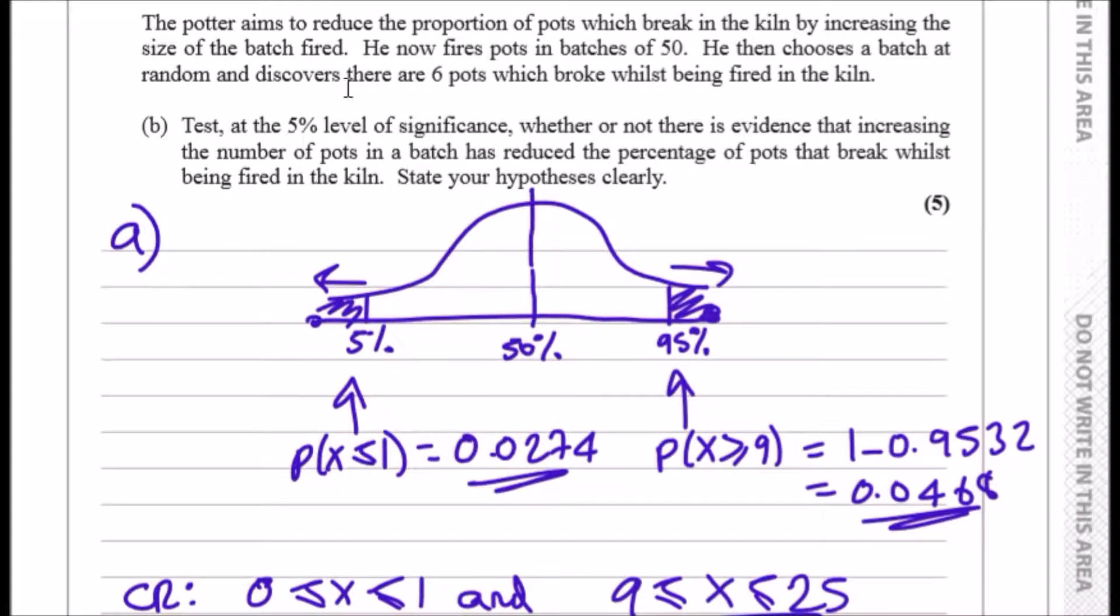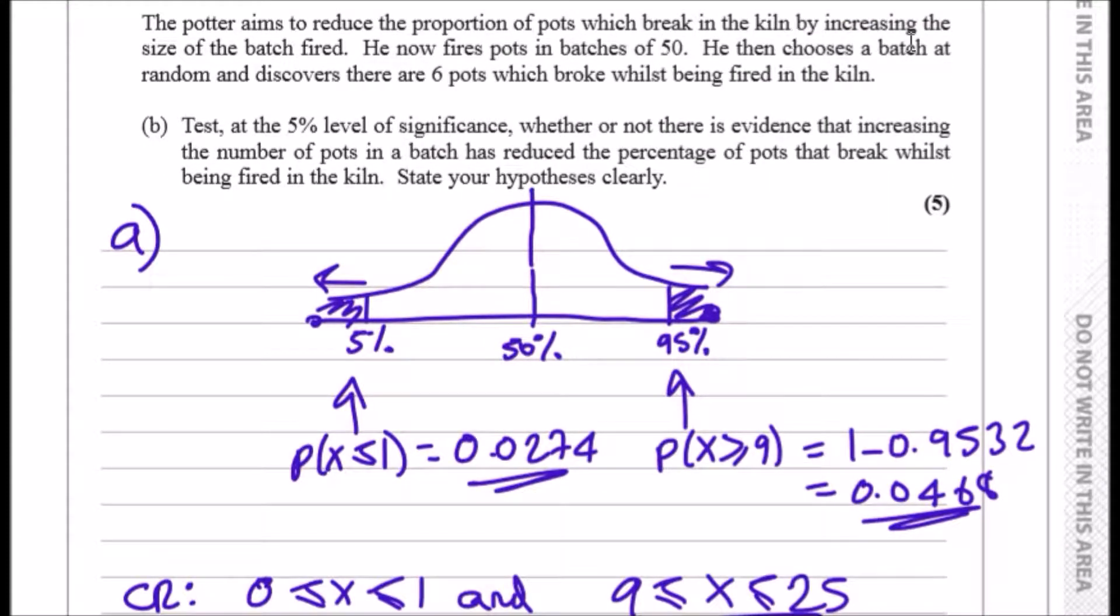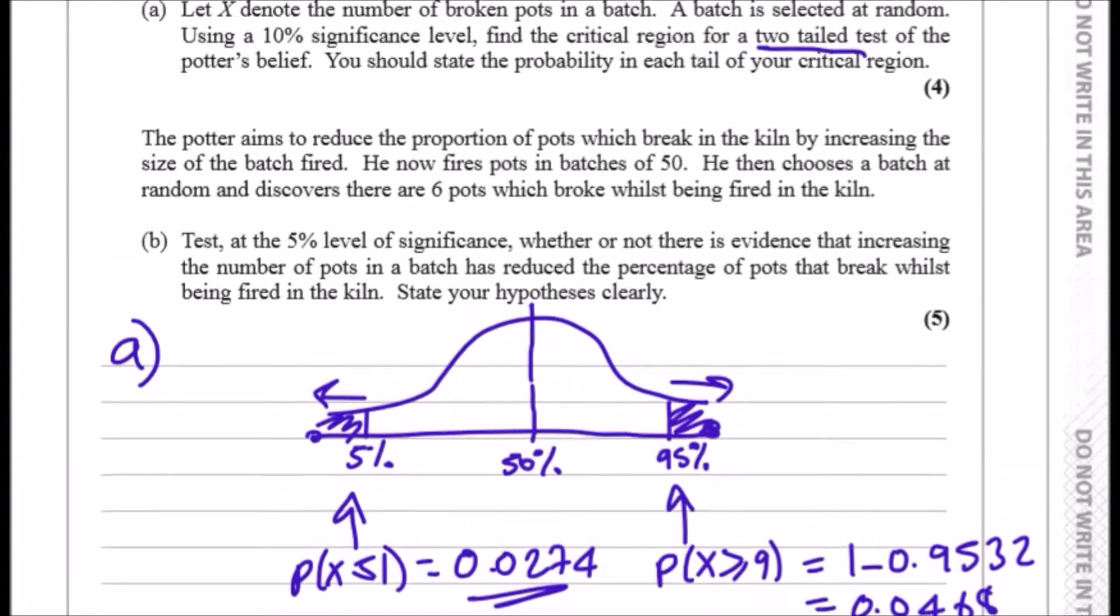Okay, here we go, part B. The potter aims to reduce the proportion of pots which break in the kiln by increasing the size of the batch fired. He now fires pots in batches of 50. He then chooses a batch at random and discovers that there are six pots which broke whilst being fired in the kiln.